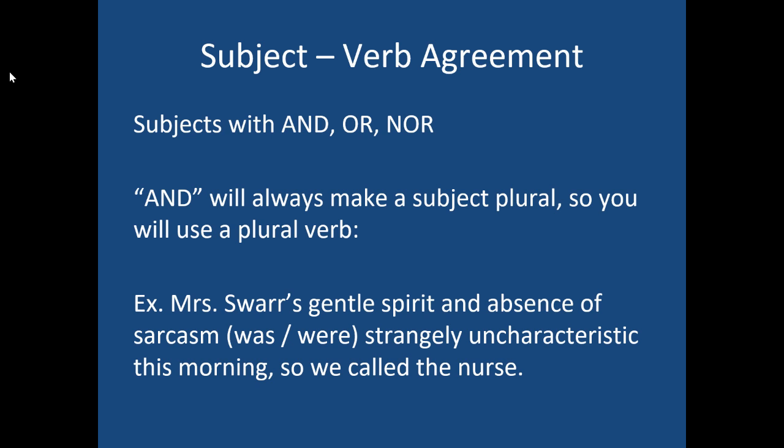For example: 'Mrs. Swars' gentle spirit and absence of sarcasm was or were strangely uncharacteristic this morning, so we called the nurse.' We would use the verb 'were'. If we diagrammed it, we'd see there are two subjects: spirit and absence. So even though the individual nouns are singular, one noun plus a second noun makes two nouns, which makes it plural. So we'd use 'were'.